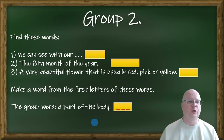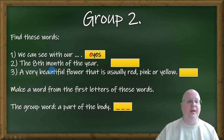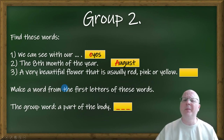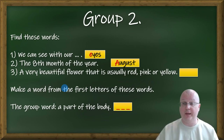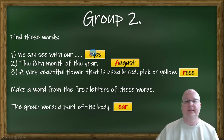Group number two: we can see with our eyes. The eighth month of the year is August. A very beautiful flower that is usually red, pink, or yellow is rose. And the group word — a part of the body — is ear: E-A-R.